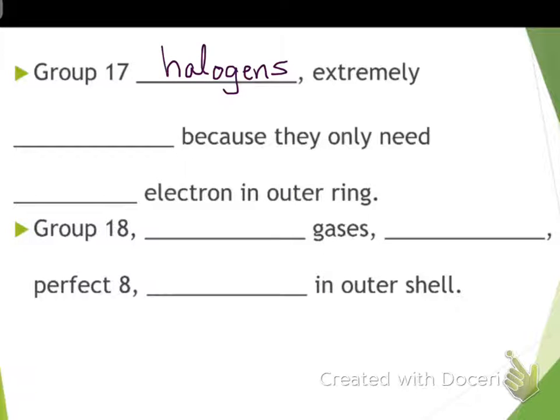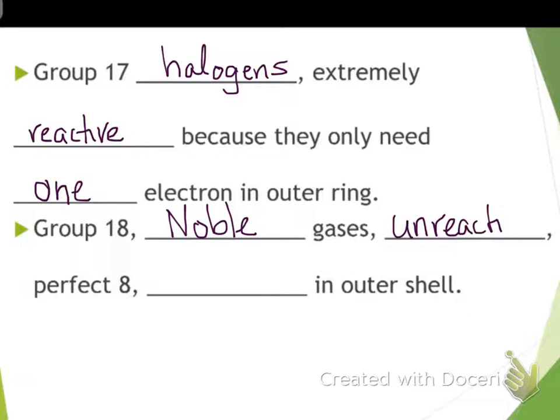Group seventeen are the halogens. The halogens are extremely reactive because they only need one electron in their outer ring, and I'm gonna draw you a picture of that in a second. But I'm also gonna draw you group eighteen, or maybe I'm gonna draw you group eighteen. I'm gonna define group eighteen for you first, and then we'll go back and talk about seventeen and eighteen.